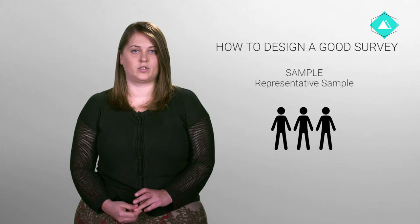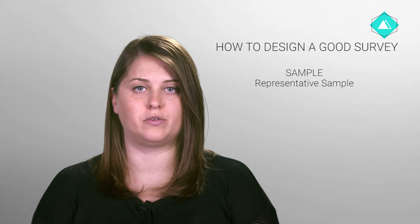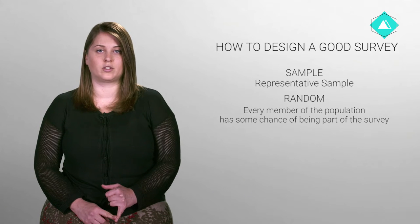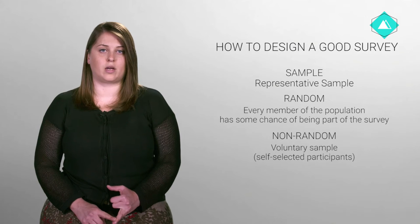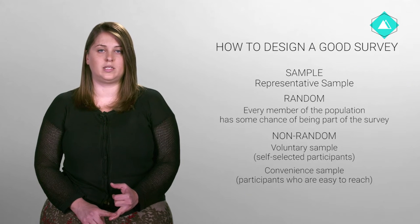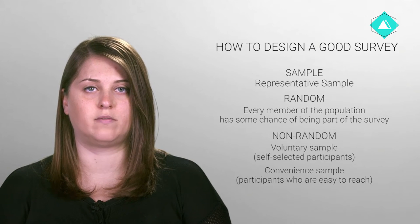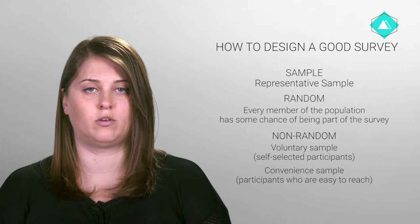Designing a sample to eliminate sources of bias and to represent the target population accurately is the key problem in designing a survey project. Keep in mind that the sampling methodology must be documented during the survey design process. There are two methods of getting a representative sample: random samples, where every person in a given population has the chance of being part of the survey, and non-random samples, such as a voluntary sample where participants choose to take part, or a convenient sample where participants are easy to reach. Unless you are doing comprehensive and time-intensive research, chances are you will choose non-random samples. Don't forget to include your sampling methodology in your survey findings.